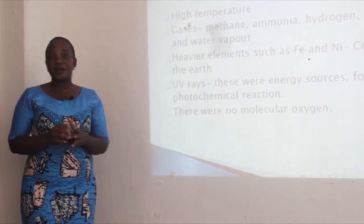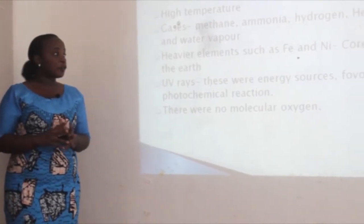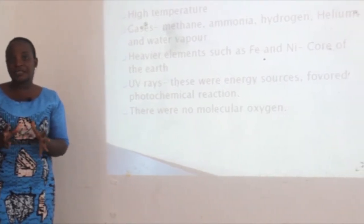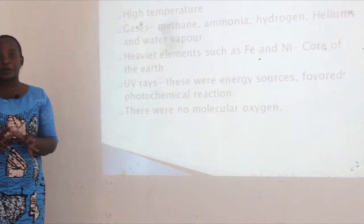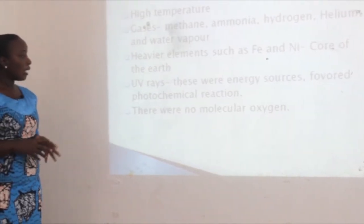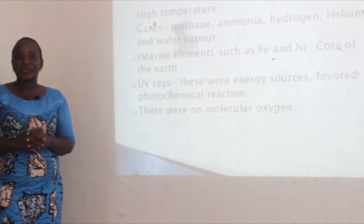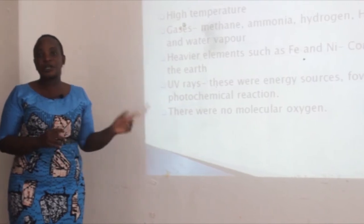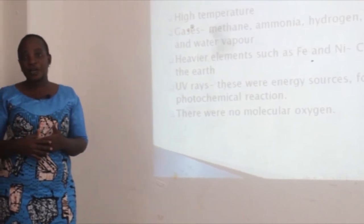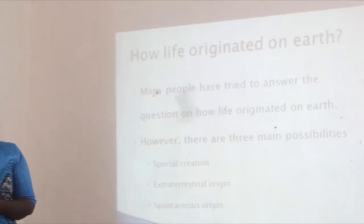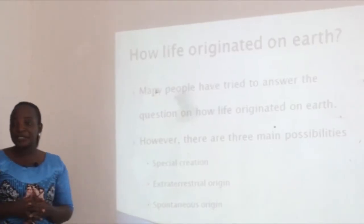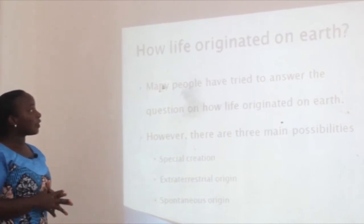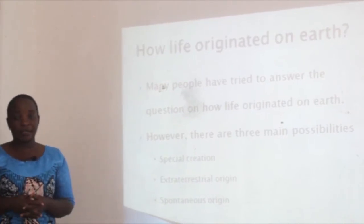Ultraviolet rays from the sun favored photochemical reactions. There was no molecular oxygen, so the atmosphere was said to be reducing. Another very important question for us to answer is how life originated on earth. Many people have tried to answer this question, and there are three main possibilities: the special creation theory, extraterrestrial origin, and spontaneous origin.